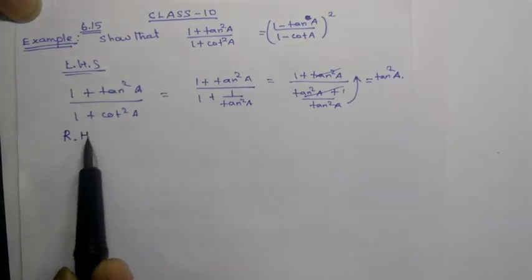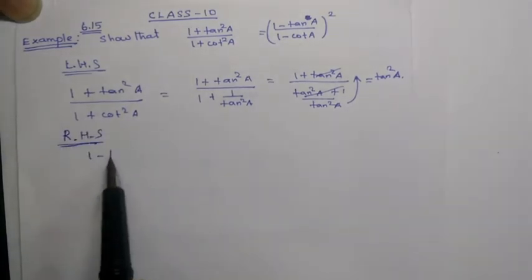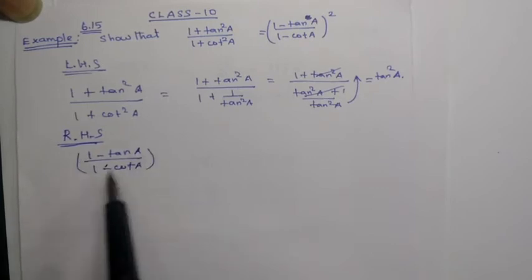Next, RHS. RHS is 1 minus tan A divided by 1 minus cot A, whole square.